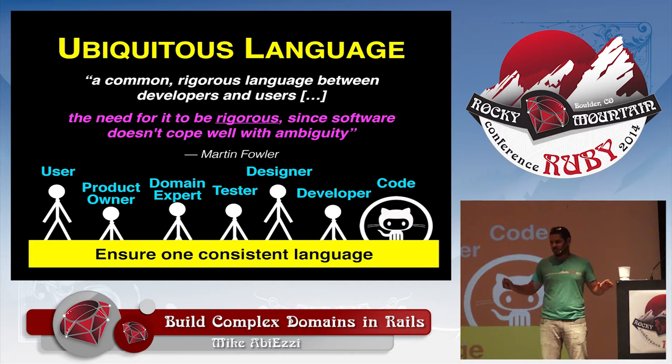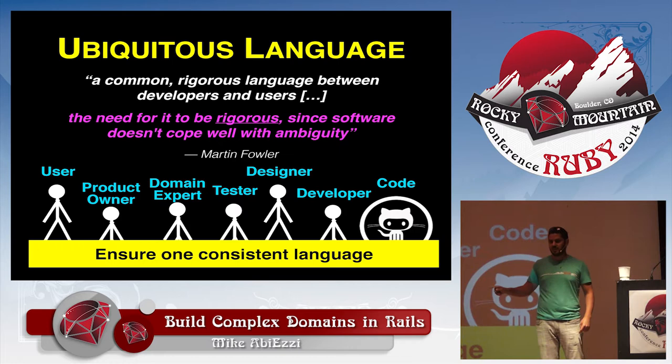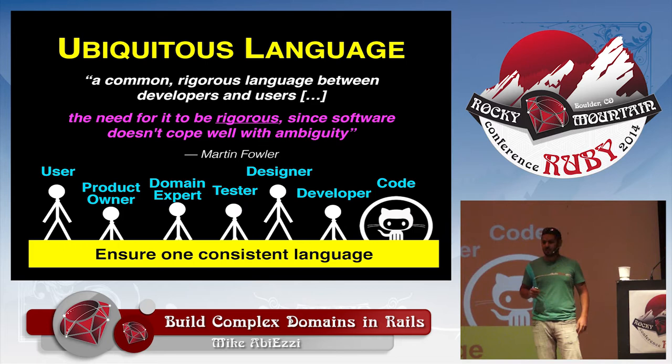If there's nothing else you get out of this presentation, this is the most important thing: make sure you have one language across the board. If you make a change in your user interface and you change terminology, then you need to make sure everybody else in the team uses that terminology, and you need to refactor your code to update it too. It's the only way to maintain control of a complex domain — make sure it's communicated efficiently and everybody understands it properly. Refactoring your code is very important.